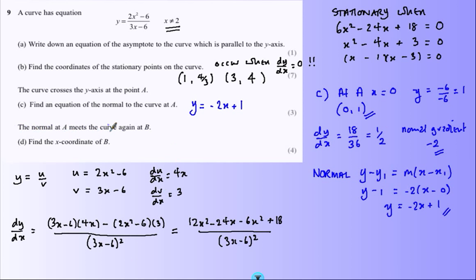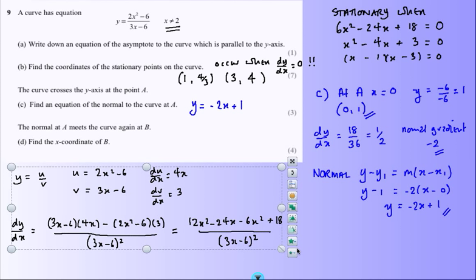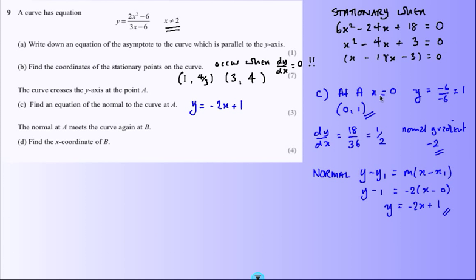And finally, the curve meets the normal again. Now I think I'm going to need a bit of space here. Let me see if I can get rid of that. I was thinking about it. Meets again - simultaneous equation. I've got y equals this, y equals this, and when do they meet? So for part D, the normal has to meet the curve.